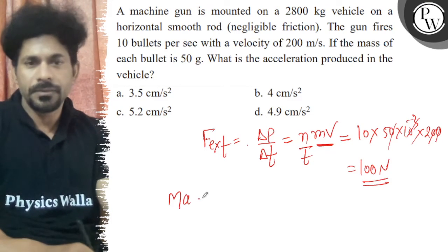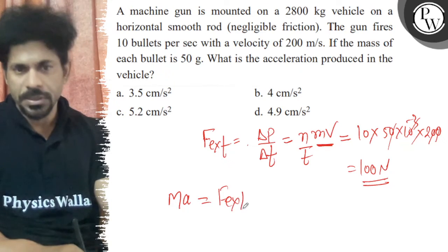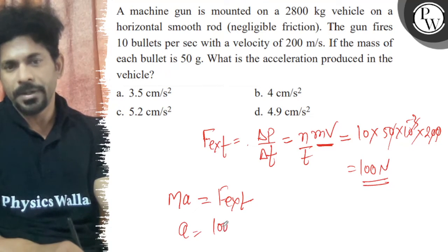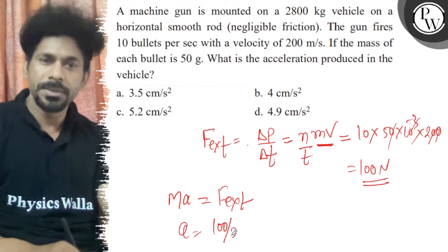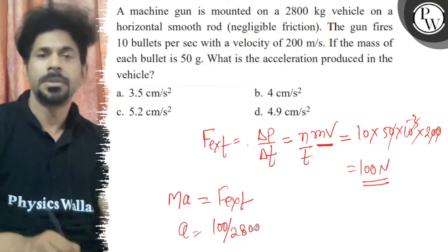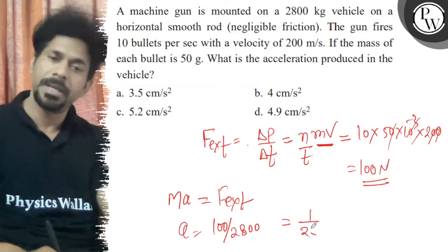So the vehicle gets acceleration with this external force. F external equals mass into acceleration. So a equals 100 divided by 2800. So you will get 1 upon 28.